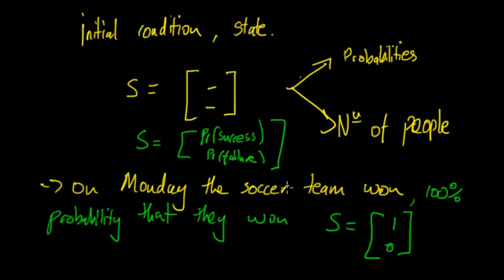A lot of the time they tell us they won their previous game, or for example it rained the previous day. So you can literally just sub in one, zero, or zero, one, as you know there's a hundred percent probability of these events occurring.